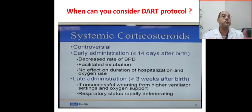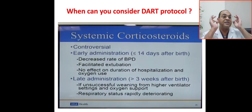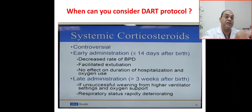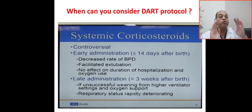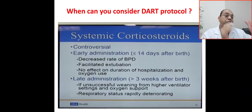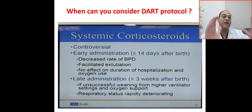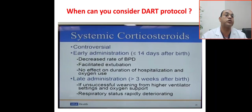For the late administration, there should be severe chronic lung disease — established or evolving chronic lung disease. Severe chronic lung disease means the patient is on ventilation, non-invasive or invasive, and oxygen required more than 30%. There should be unsuccessful weaning from higher ventilation settings and oxygen support, and respiratory status rapidly deteriorating. This late administration of Dexamethasone is indicated more than three weeks after birth, with the patient on high mechanical ventilatory settings, high oxygen support, and respiratory status rapidly deteriorating.